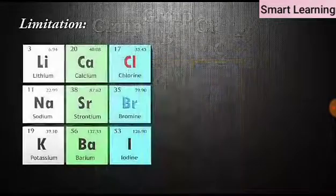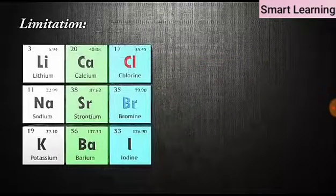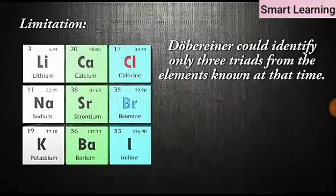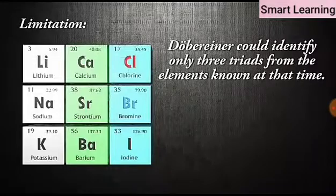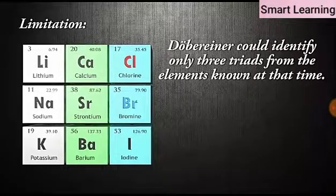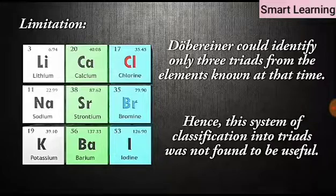One of the limitations of this classification was that Dobereiner could identify only three triads from elements known at that time. Hence, this system of classification into triads was not found to be useful.